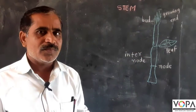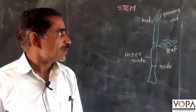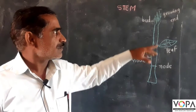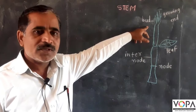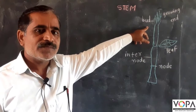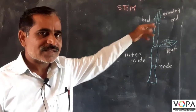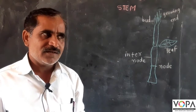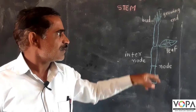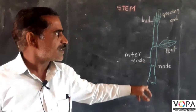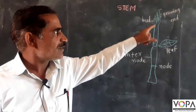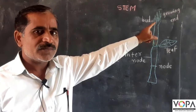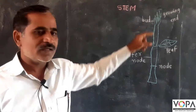From the growing end of the stem, the length of the stem increases. As the sprouting of the plumule increases, the length of the stem also increases, and the growing end of the stem is called the bud.